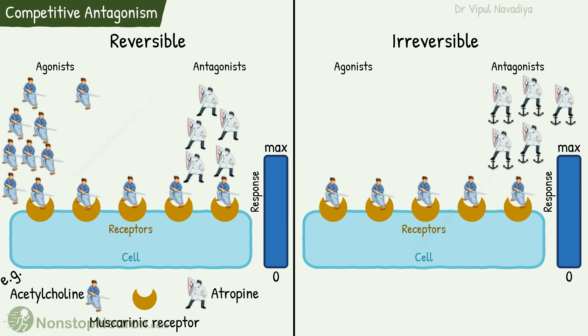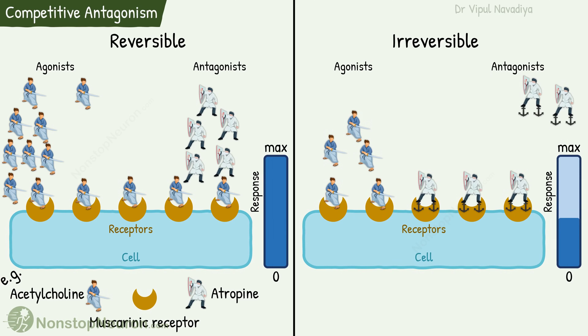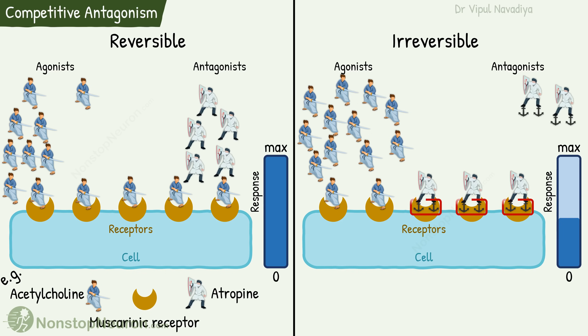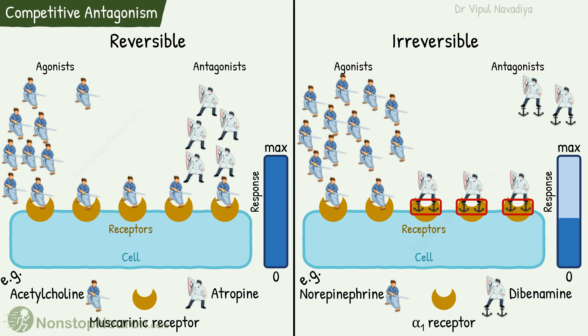Now let's talk about irreversible antagonism. In this, the antagonist binds with a strong covalent bond, so the binding is irreversible. Even if we increase agonist concentration, the antagonist is not displaced because of the strong bonding, and maximum response cannot be achieved. For example, dibenamine is an irreversible competitive antagonist of norepinephrine at alpha-1-adrenergic receptors.